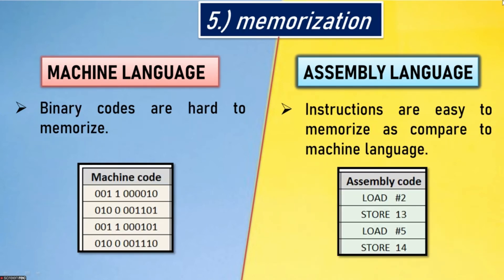Fifth point — memorization. In machine language, binary codes are hard to memorize. In assembly language, instructions are easy to memorize as compared to machine language.